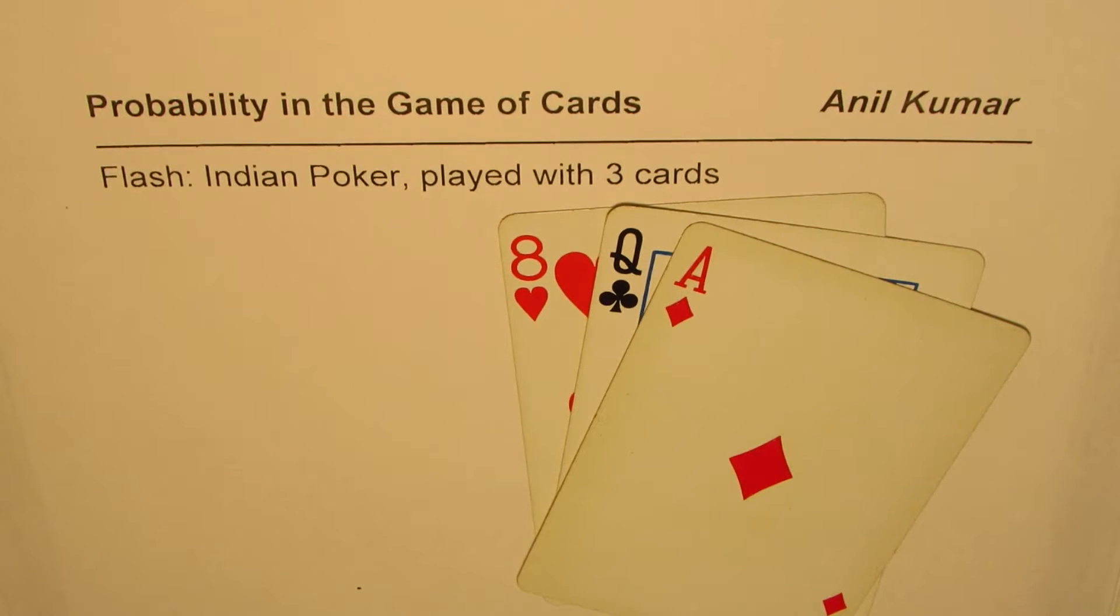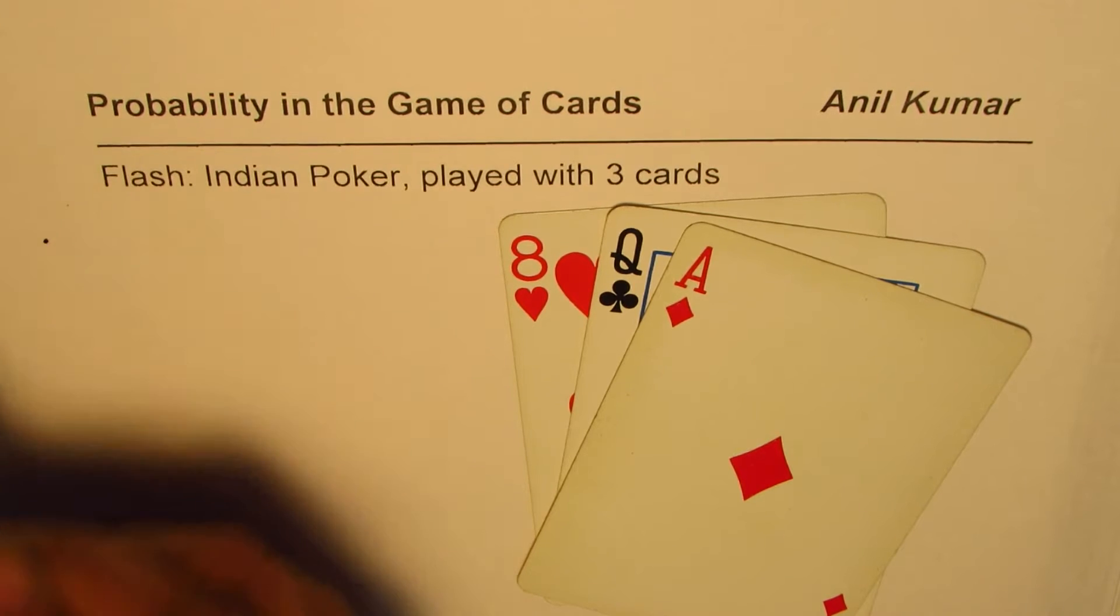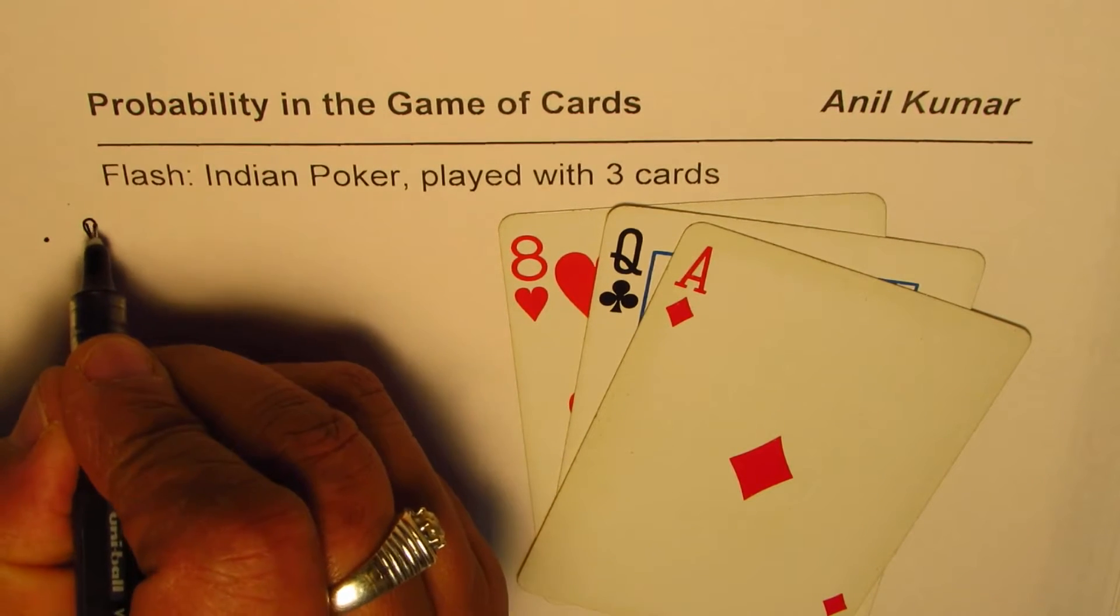I'm Anil Kumar, and in my series of finding probability in the game of cards, we are discussing the game of flash, the Indian poker, which is played with three cards. Now here is a very common combination we get, a formation which is not those significant ones.